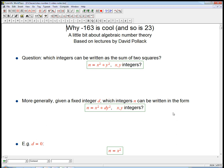In this series of videos, I want to talk about why -163 is a cool number, and also 23, numbers that would be instantly recognizable to certain mathematicians. The subtitle is a little bit about algebraic number theory. There's absolutely no claim to originality in this.